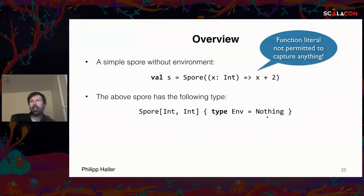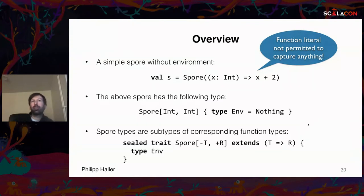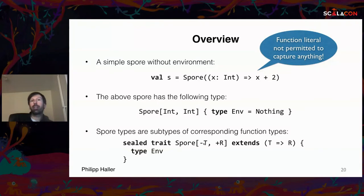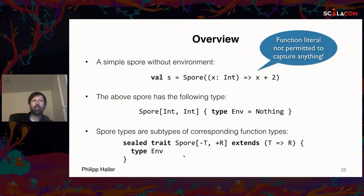A `Spore[T, R]` extends function type `T => R`, is contravariant in T and covariant in R, just like function types. The main addition is the type member `env`, the type of the environment. For safety reasons this trait is also sealed so user code cannot extend it. Now, for spores with environments: if we want to capture something, we must make it explicit. The spore must be explicitly initialized with the environment.